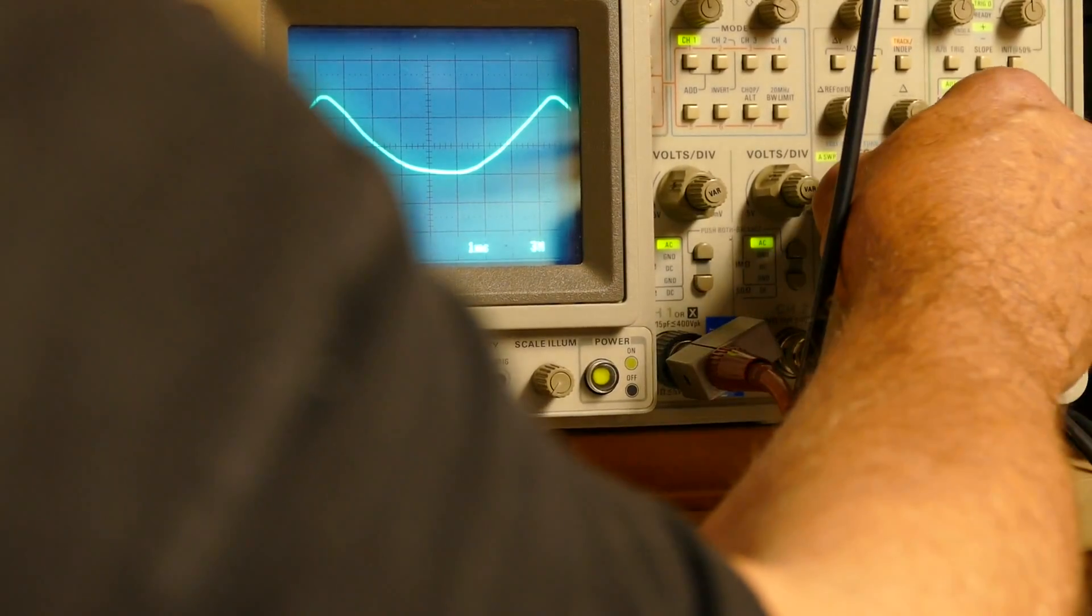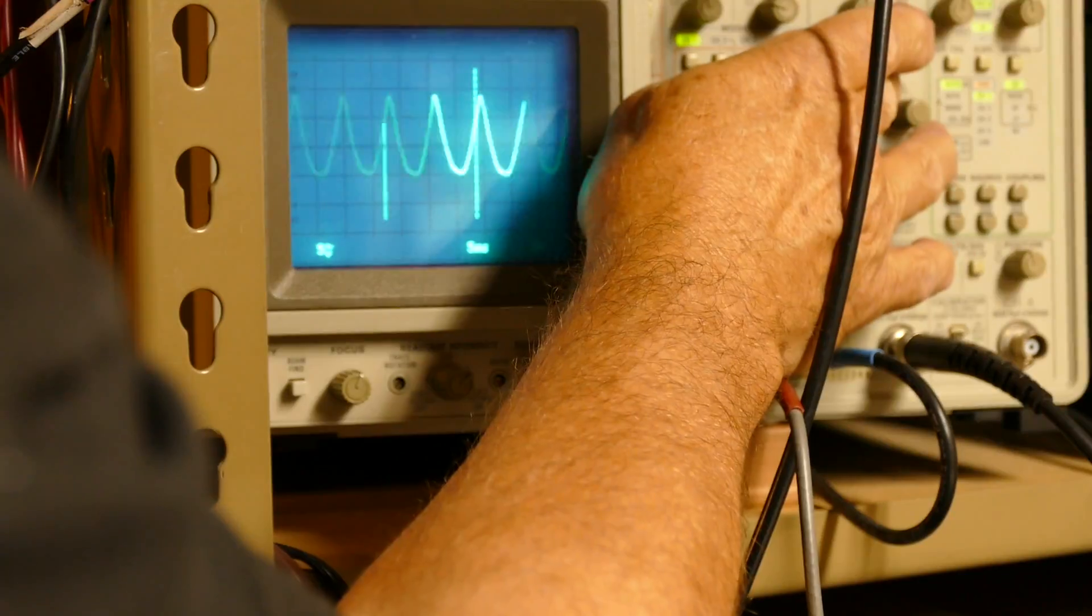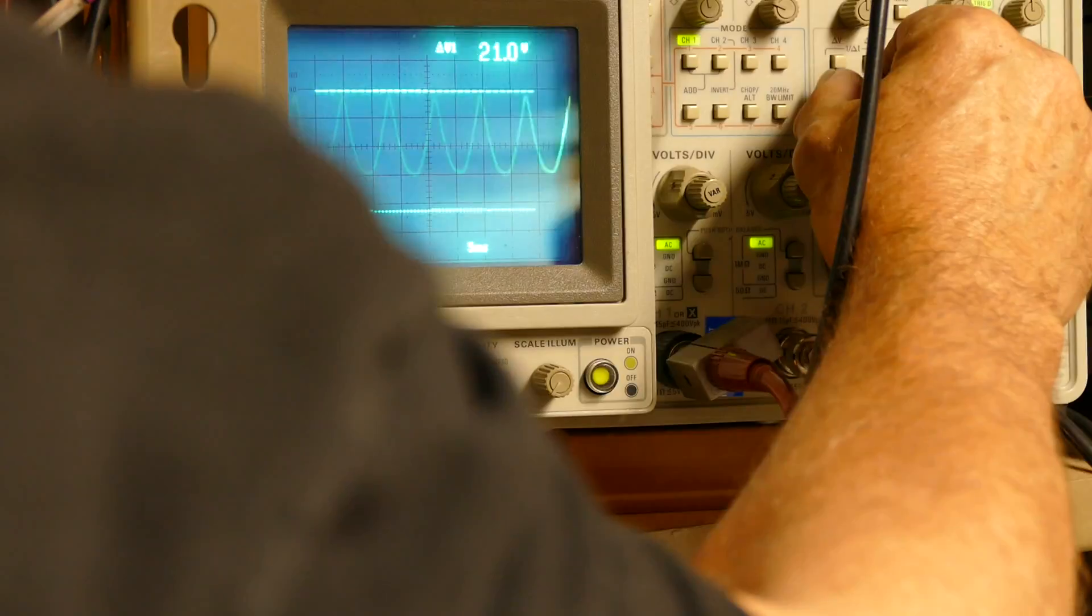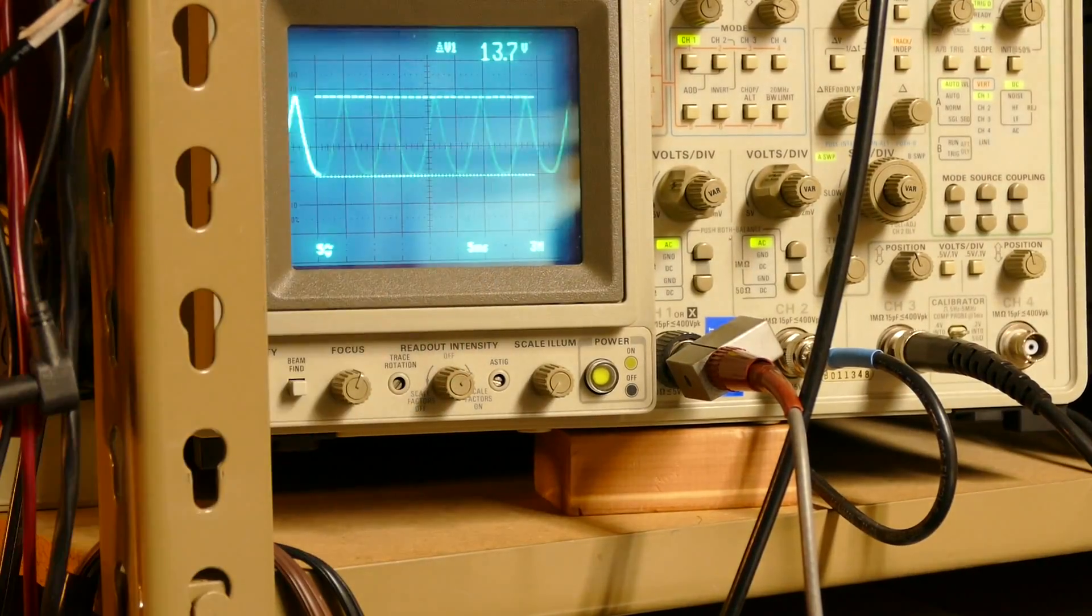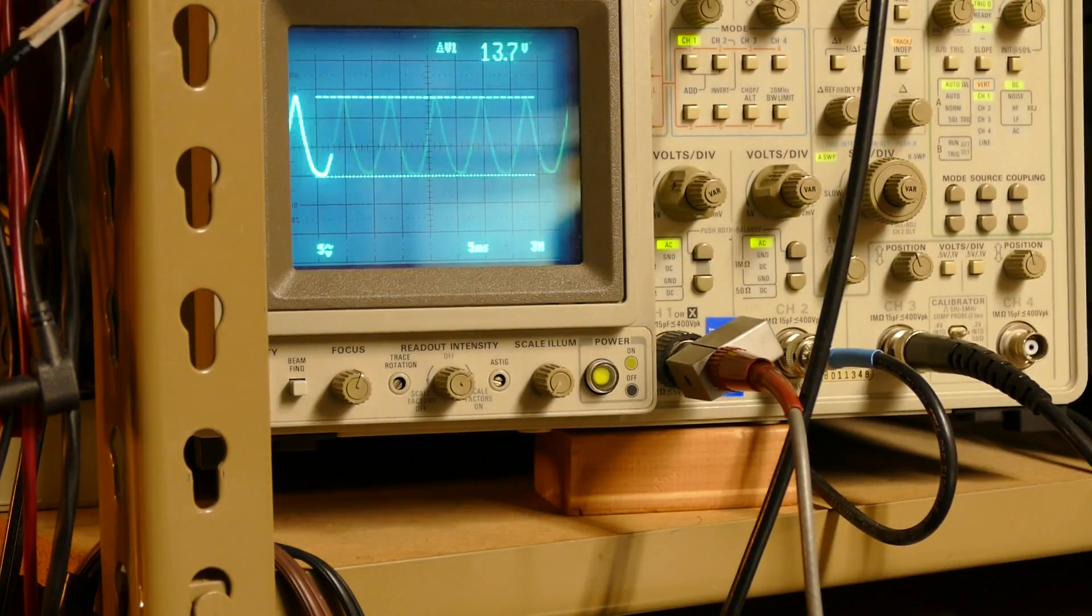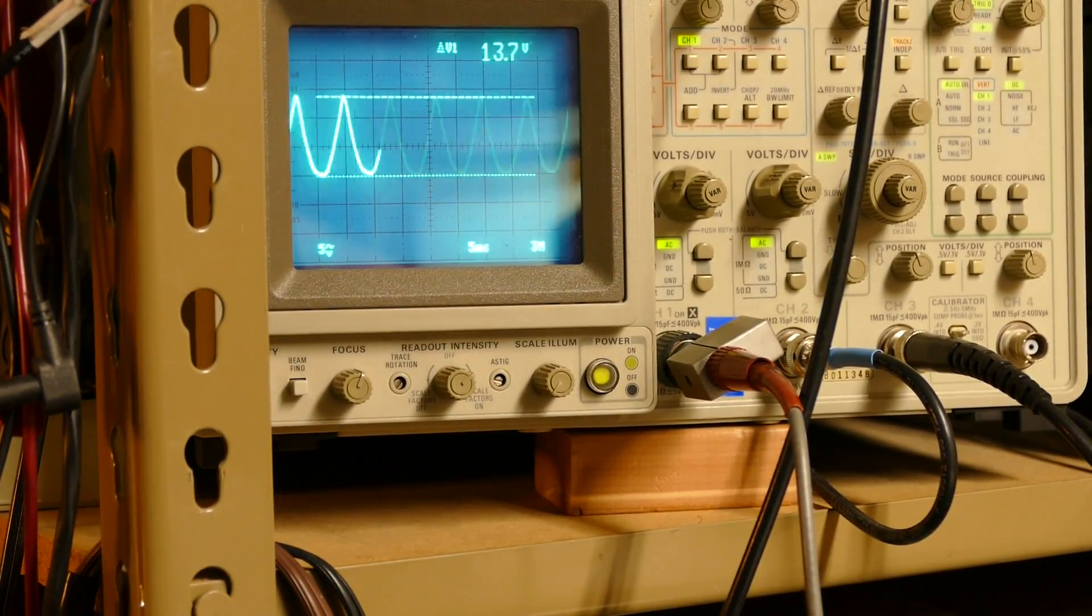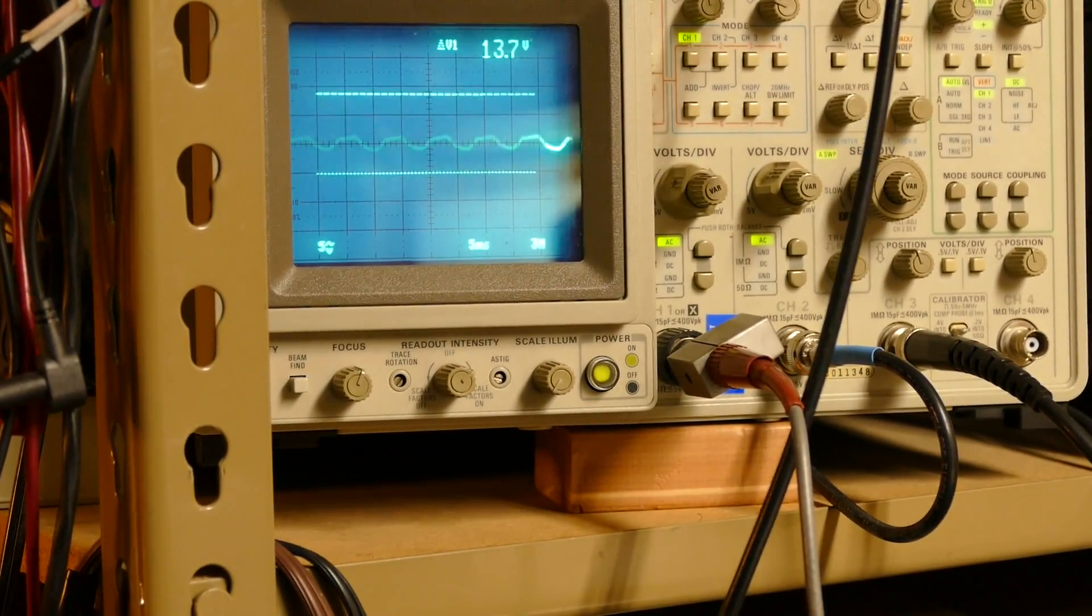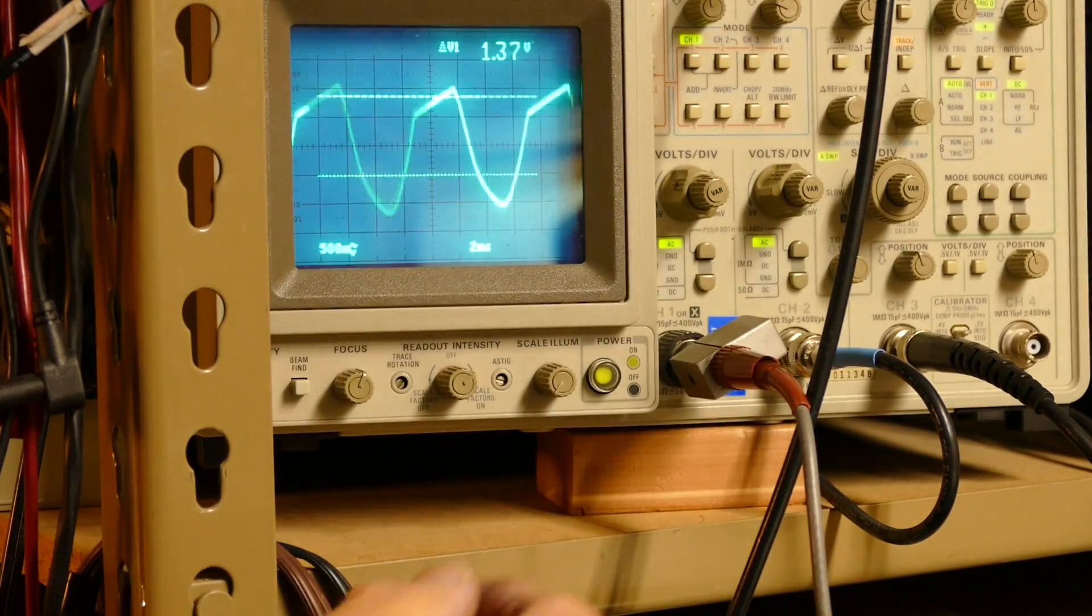You can see it's 13.7 volts of ripple, which is what you expect - it's just unfiltered AC. Putting the 49,000 back across it drops it considerably down to that 2.3 we had a while ago.